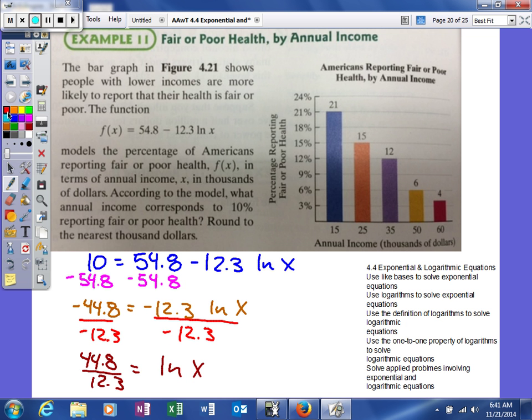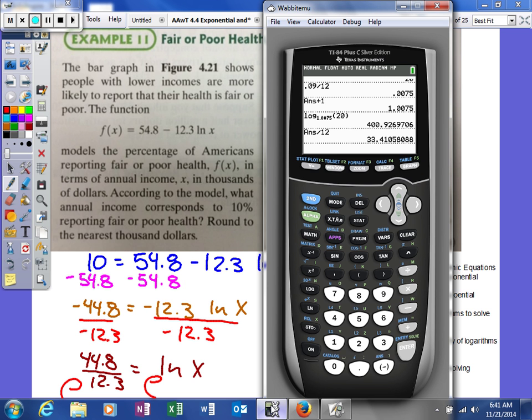So my next thing is to exponentiate with the base of e. So it's going to make both sides the exponent of e. So I'm now going to type this in my calculator and see if I can figure it out. So I'm going to raise e to the 44.8 divided by 12.3 power.